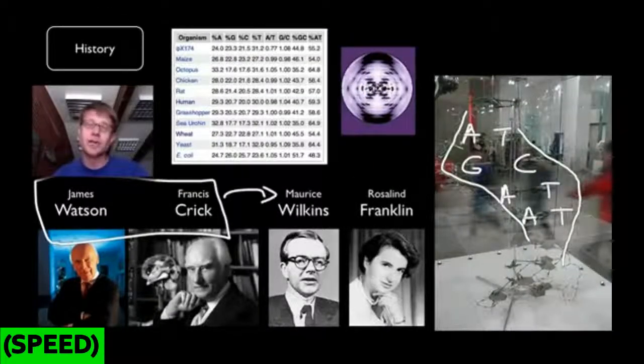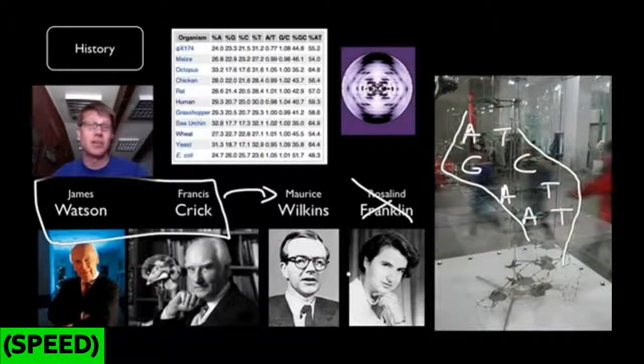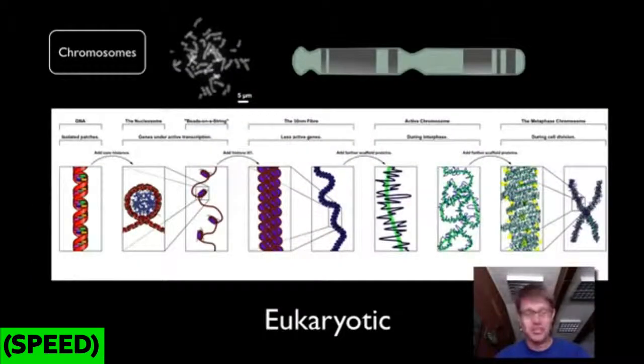They actually share the Nobel Prize with Maurice Wilkins. Rosalind Franklin doesn't get the Nobel Prize because, sadly, she had died before then of cancer. And it was probably as a result of the x-rays that she was using in her lab. And you can't get a Nobel Prize if you die.